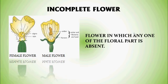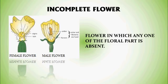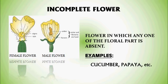Incomplete flower — a flower in which any one of the floral parts is absent is called an incomplete flower. In this photograph, two flowers are shown: a female flower and a male flower. In the female flower, the male reproductive part, Androecium, is absent. In the male flower, the female reproductive part, Gynoecium, is absent. Examples: Cucumber, Papaya, etc.